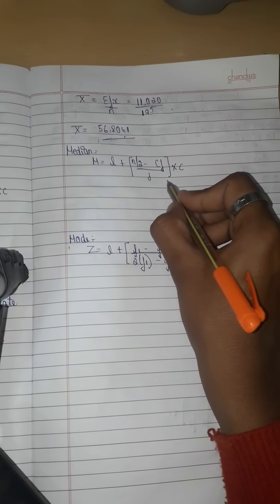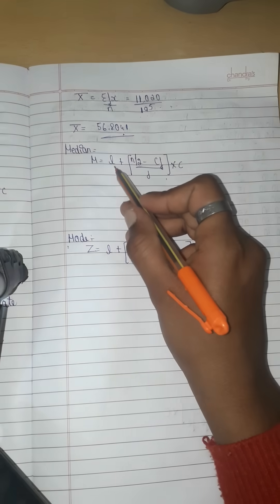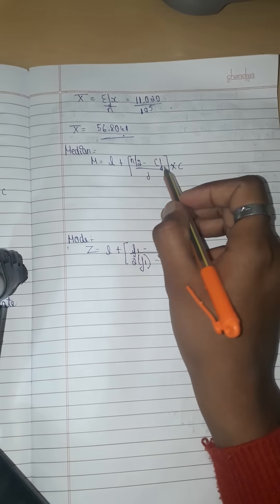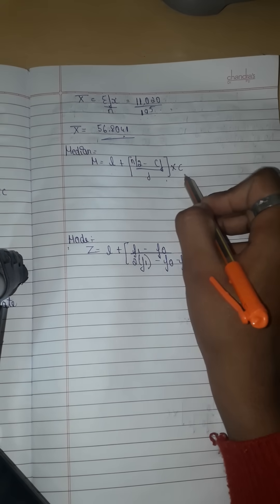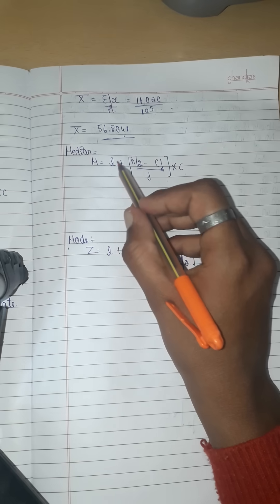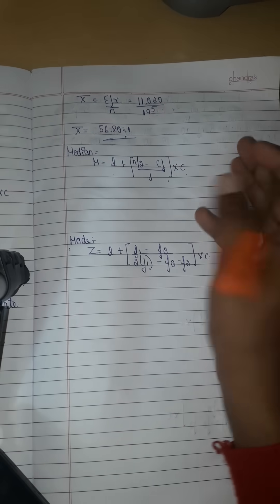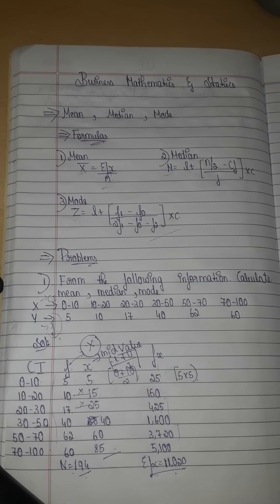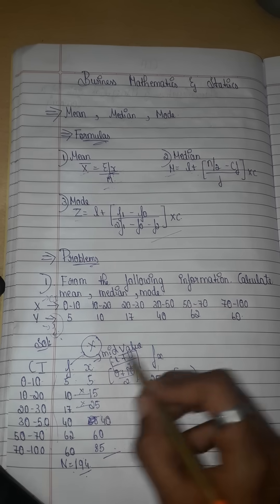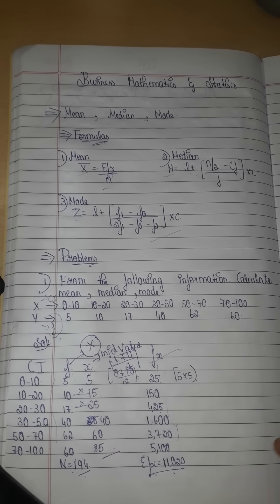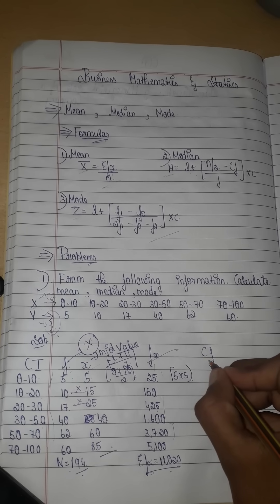Next we will find the median. The median formula is: lower limit plus (n by 2 minus cf) divided by f, into c. We need to find the cumulative frequency (cf) column. We have columns: class interval (CI), frequency (f), x, fx, and cf.